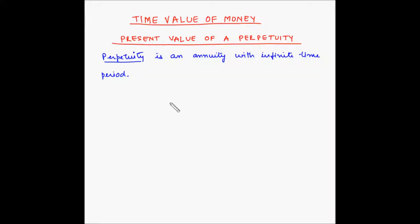Welcome to another video on time value of money. In this video, we will understand the concept of present value of a perpetuity. So what is a perpetuity? Perpetuity is an annuity with an infinite time period — a fixed amount of money paid or received for an infinite time period.